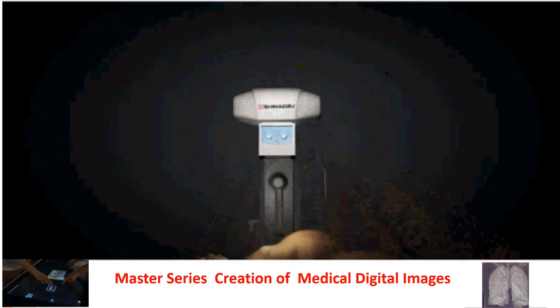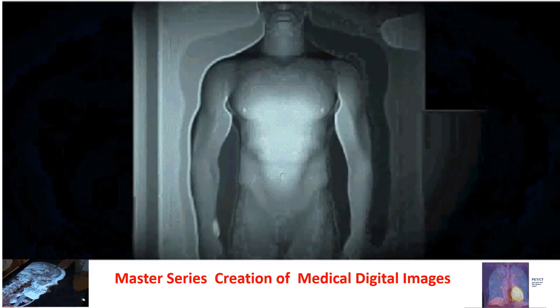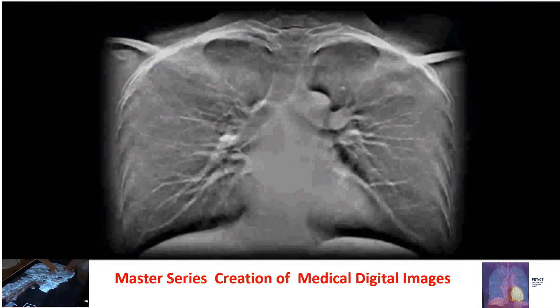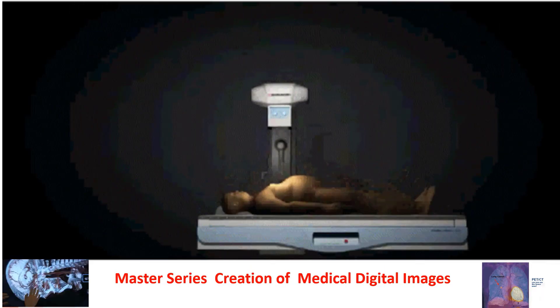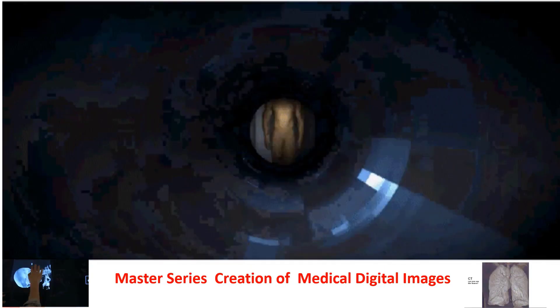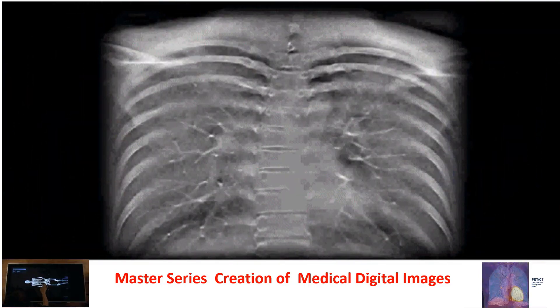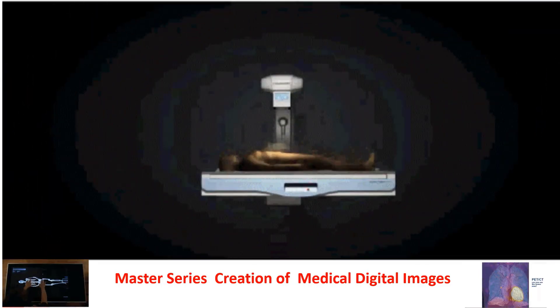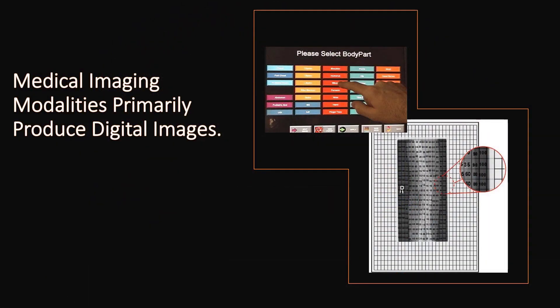Welcome to our Master Series: Creation of Medical Digital Images. This is the first presentation, which discusses the interaction of ionizing radiation with tissue and creating the data for images. The modalities used in medical imaging primarily produce digital images for analysis of anatomy, physiology, and pathology.